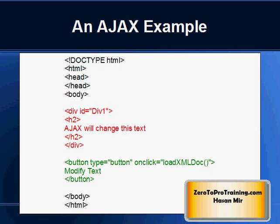Within the body section, you can see one division section called DIV. Below that, you see one button section. The division section will be used to display information returned from a server. When the button is clicked, it calls a function named LoadXMLDoc. The best place to put this function is the header section.